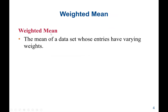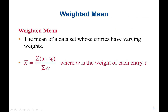We start with the weighted mean — the mean of a dataset whose entries have varied weights. The formula is X-bar, the sample mean, equal to the sum of each data entry multiplied by the weight of that entry, divided by the sum of the weights. W is the weight of each entry X.